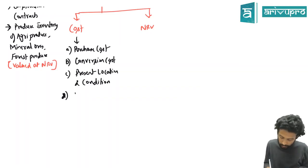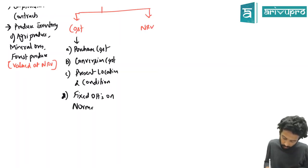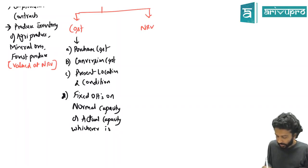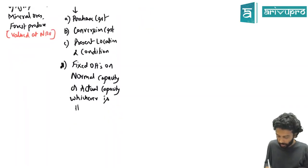And any other cost to bring the inventory to present location and condition. When you're doing conversion cost, something you have to keep in mind. What is that? Fixed overheads on normal capacity or actual capacity, whichever is higher. Because higher the denominator, lower the per unit value and lower the closing stock.